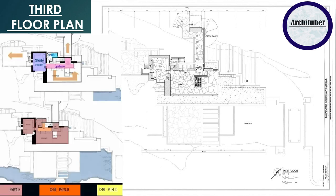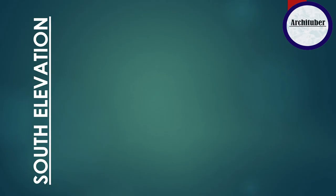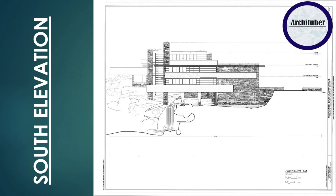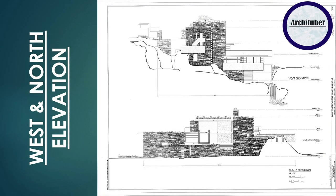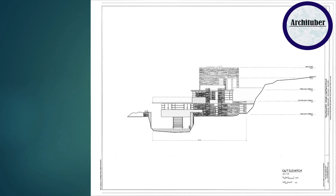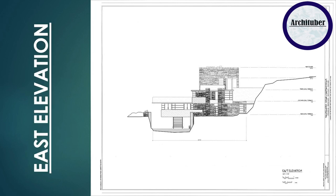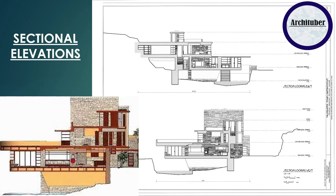On the third floor, Wright has designed a gallery and study room, which is private space. Talking about the elevations, you can see the materials that are used and the horizontal planes projecting outward, which balances the structure very well — the vertical and horizontal planes work together beautifully. Looking at the sections, you can see how Wright has played with the levels.